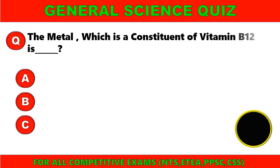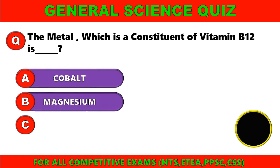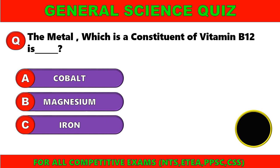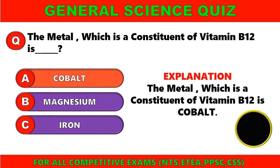The metal which is a constituent of vitamin B12 is: A. Cobalt, B. Magnesium, C. Iron. The right option is A. Cobalt. The metal which is a constituent of vitamin B12 is Cobalt.